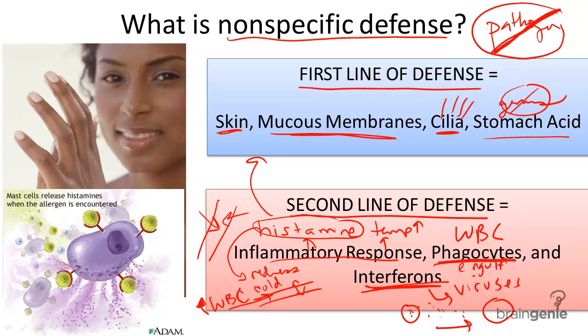So all of these are types of nonspecific defense: the skin, cilia, inflammatory response, and interferons. They either protect us against pathogens or serve to limit the spread of them. There is a third defense in this war against pathogens, so check out the other video on specific defense.